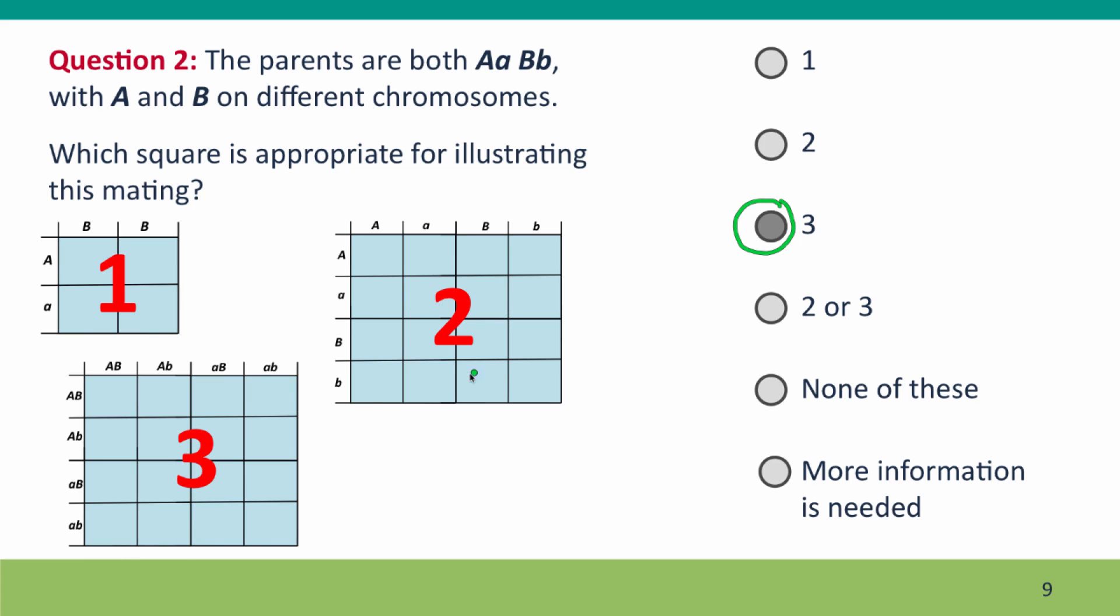This square two would never be appropriate because we wouldn't have gametes that only had gene A or only had gene B.